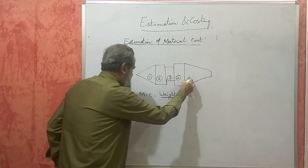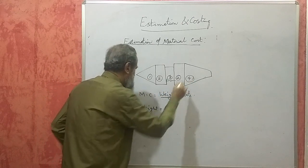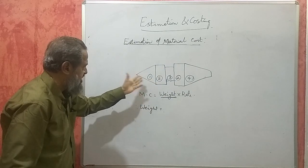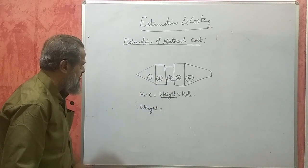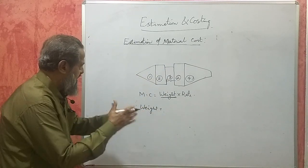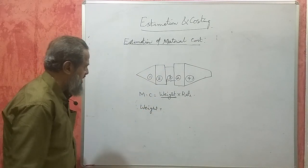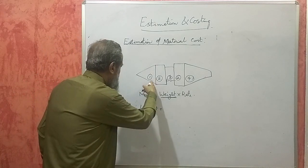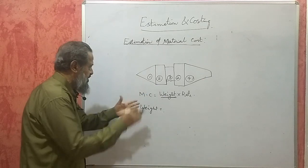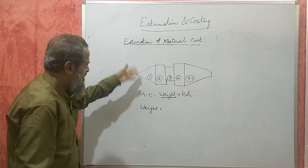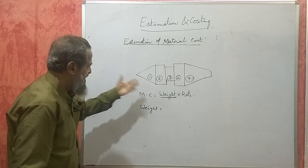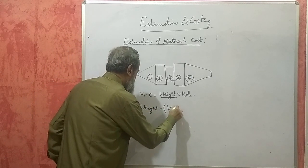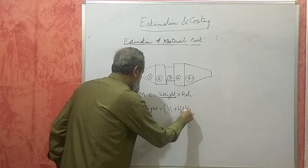There need not be only four parts — there can be three, two, or five also. In this case, it will get divided into four parts. Divide it into convenient parts, then find the volume of each one separately using a suitable formula depending upon its shape, and then add those volumes: V1 plus V2 plus V3 plus V4.